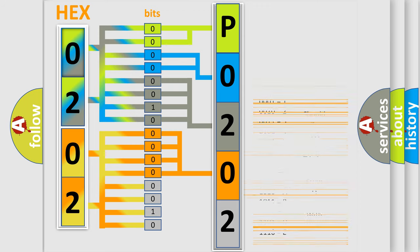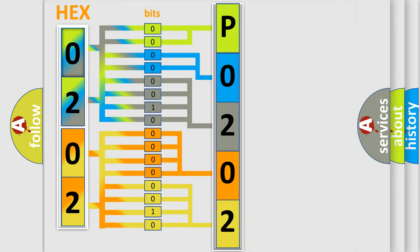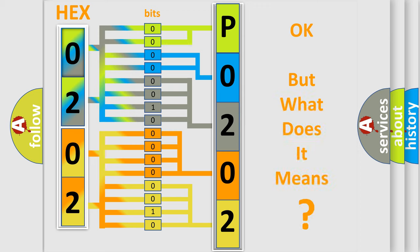A single byte conceals 256 possible combinations. We now know in what way the diagnostic tool translates the received information into a more comprehensible format. The number itself does not make sense to us if we cannot assign information about what it actually expresses.